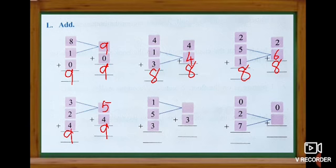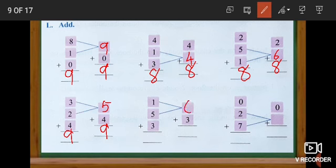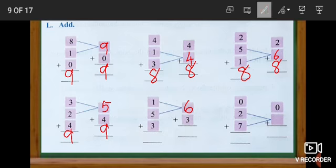Look at the next sum. The numbers are one, five and three. Here they tell us to add one and five first. One in the mind and five in the finger. After one: two, three, four, five, six. When we add one and five we get number six. Next we add number three with six — keep six in the mind and three in the finger. After six: seven, eight and nine. The answer is nine.